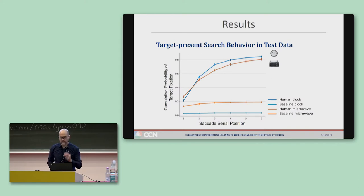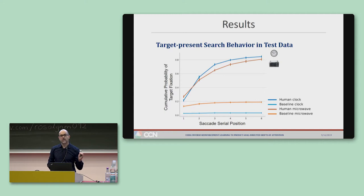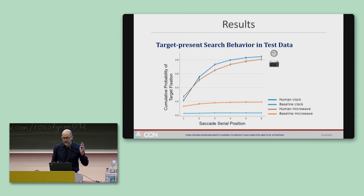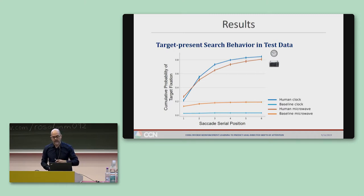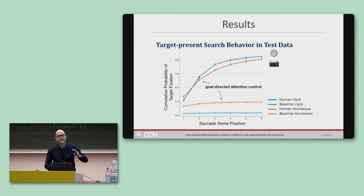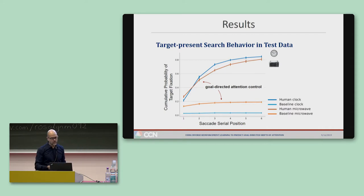Now let's shift to results, starting with the behavioral test data we're trying to explain and predict. Here is the cumulative probability of subjects fixating the target as a function of saccade serial position. The top two lines are fixation probabilities on the microwave and clock targets, and the bottom lines are non-target object baselines capturing chance performance. The big takeaway is that targets were far more likely to be fixated than chance, with the slopes of these lines indicating the strength of this guidance — showing we have a strong attention control signal in the data.